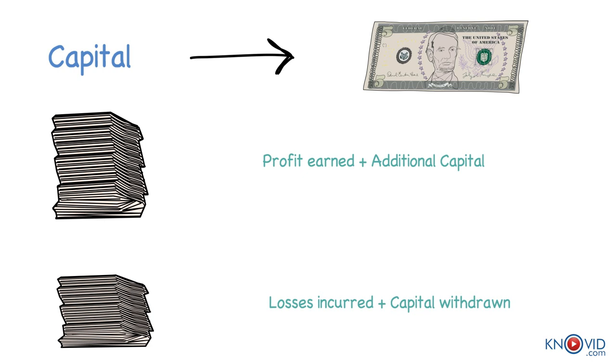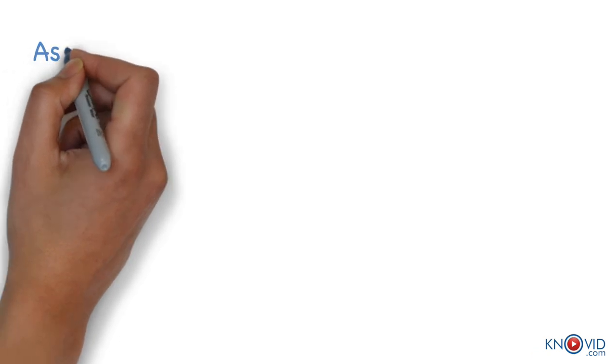For example, if someone starts a business with Rs. 5 lakhs, his capital would be Rs. 5 lakhs. Assets are the properties that belong to the business.